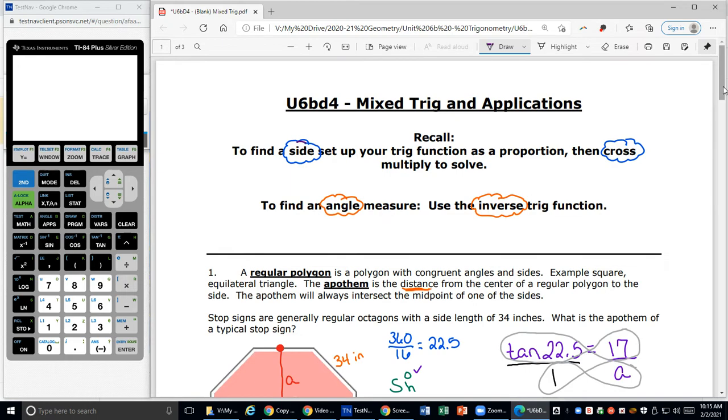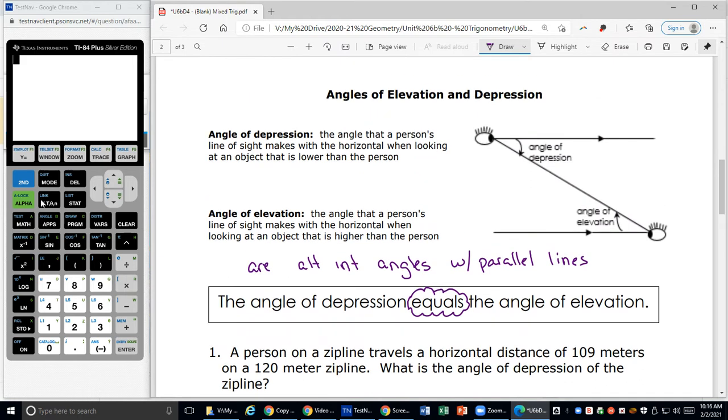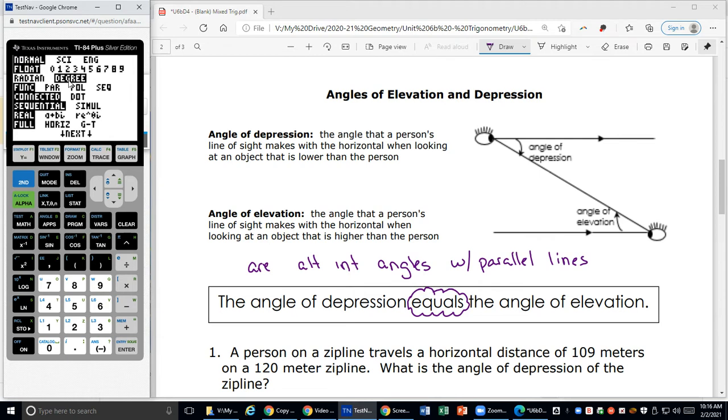We haven't had an angle problem yet. I think that might be our next one. I have my calculator already open, and I believe I already have it set to degrees, but it doesn't hurt to hit mode and just check. Yes, it's in degrees. If it wasn't, we could just arrow over to it and hit the enter key before we hit second and quit to make sure we're in the correct mode.